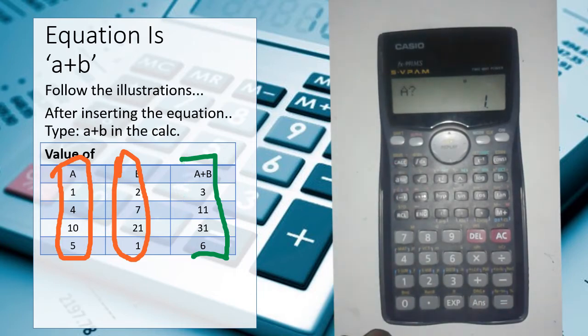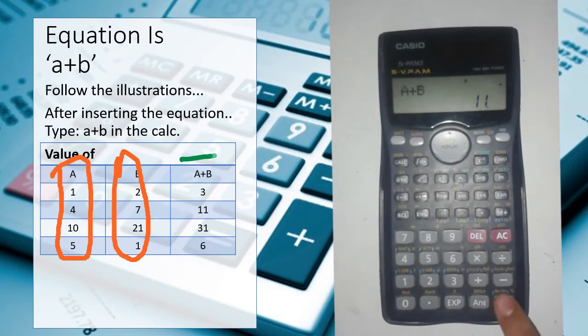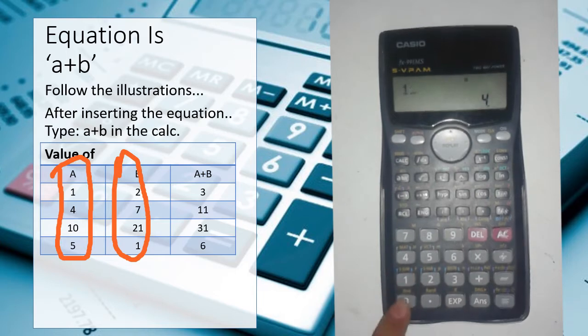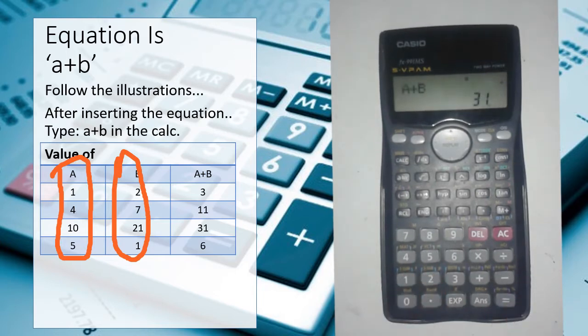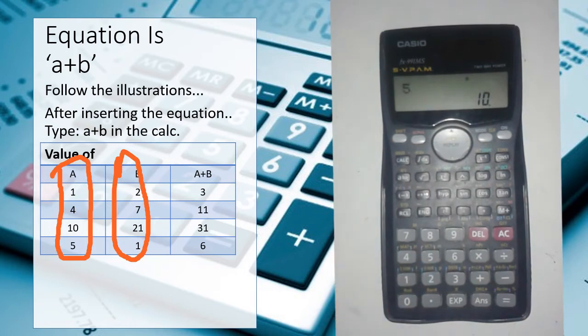Again press the calc button to insert fresh values: 4, 7 equals 11. Now you can even insert new values by pressing the equals button: a 10, b 21 equals 31. Similarly, by pressing the calc button, you can insert new values of a and b and get the required answers.